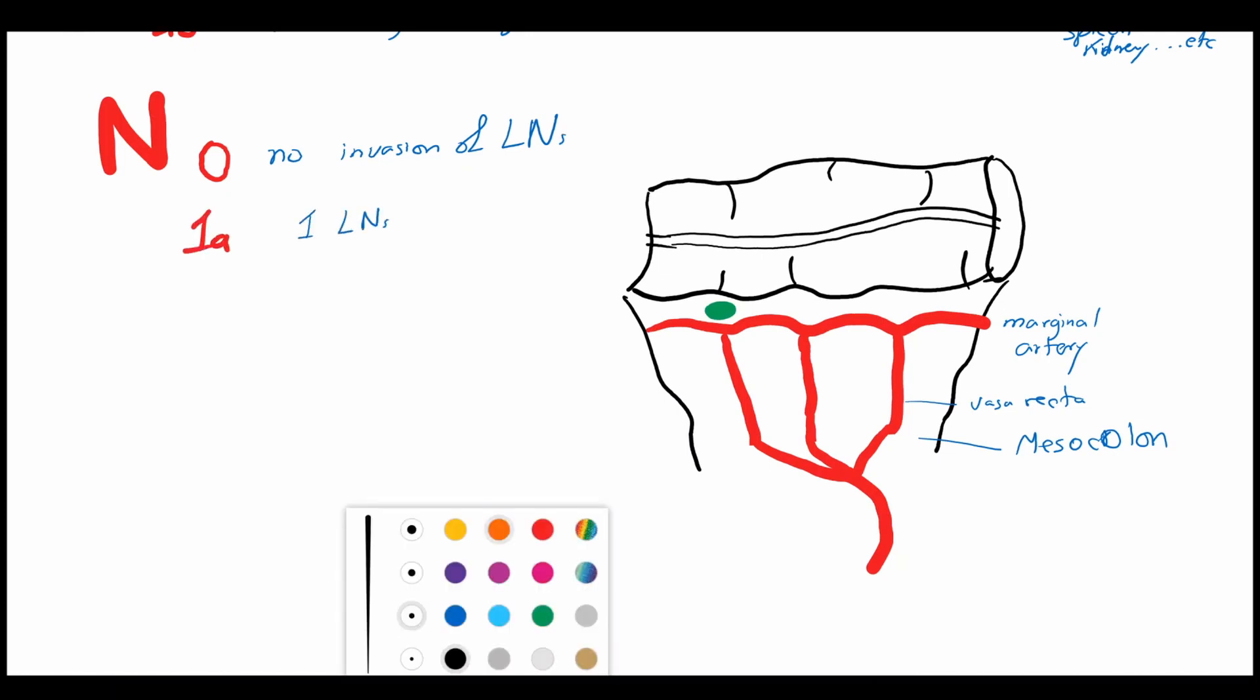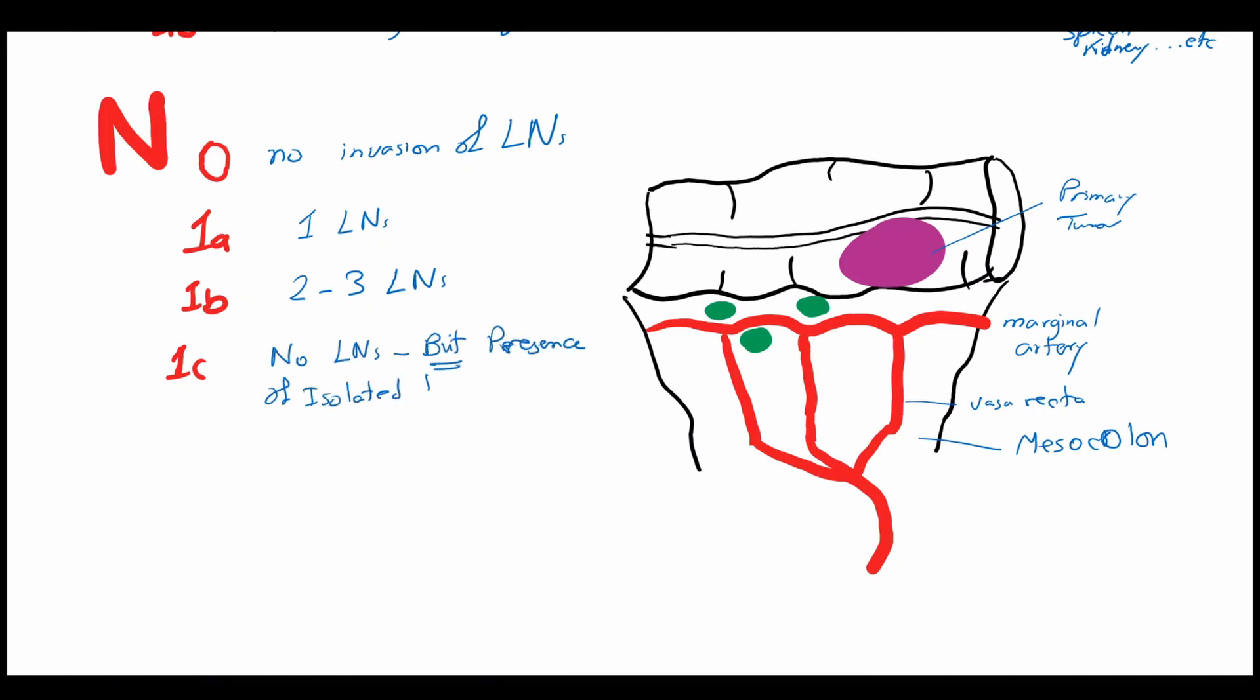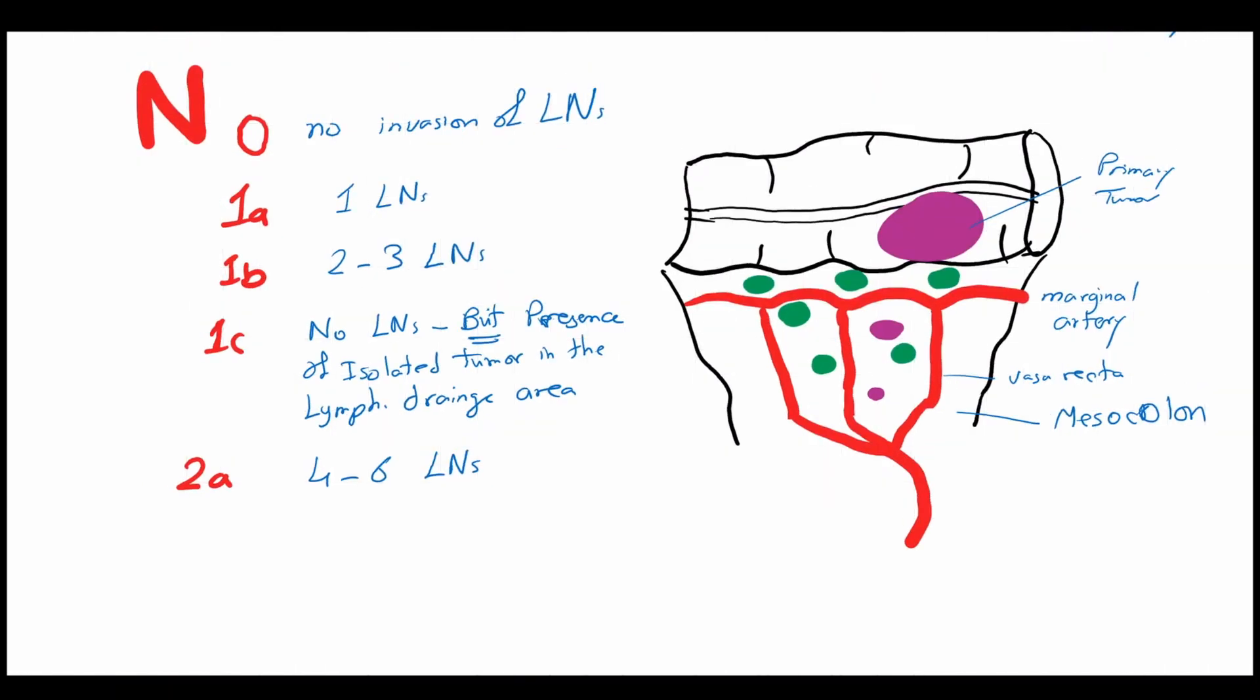N0 means no lymphatic invasion. N1a means one lymph node in the pericolic area. N1b means two to three lymph nodes in the pericolic areas. N1c where there is no affected lymph nodes but there is a presence of isolated tumor in the lymph drainage area of the tumor. N2a is four to six lymph nodes. N2b is seven or more affected lymph nodes in the drainage area of the tumor.